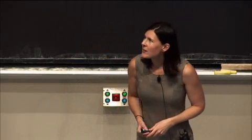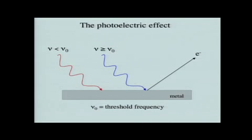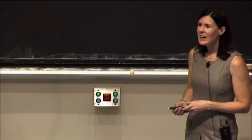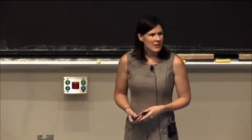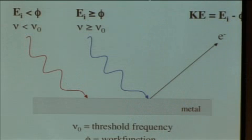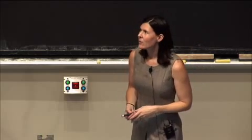Where we left off with the photoelectric effect was when we first introduced the effect, we were talking about it in terms of frequencies — a threshold frequency, meaning a minimum frequency of light needed to eject an electron from a metal surface. What Einstein clarified was that we could also talk about energies. Energy and frequency are proportional: you multiply frequency by Planck's constant. So now we talk about incident energy, and the work function — the minimum amount of energy required to eject an electron.